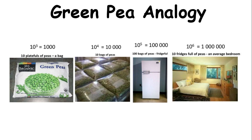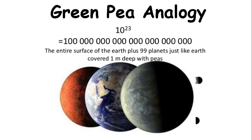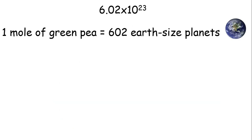10 raised to the 20th power is equal to the land mass of China covered with 1 meter deep. But remember, it's 23. So 10 raised to the 23rd power is equal to the entire surface of the earth plus 99 planets just like earth. So imagine how huge 602 hexillion is.